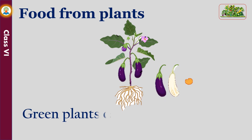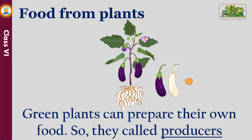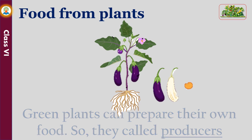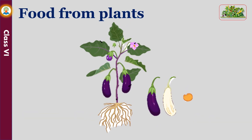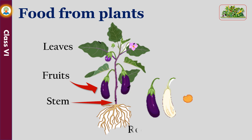Green plants can prepare their own food, so they are called producers. Plants store the extra food in different parts such as fruits, leaves, stems, roots, flowers, and seeds in the form of starch.